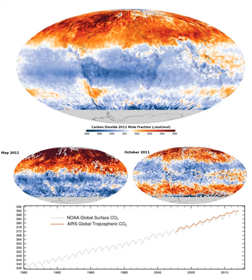About 30–40% of the CO2 released by humans into the atmosphere dissolves into oceans, rivers and lakes, which has produced ocean acidification.